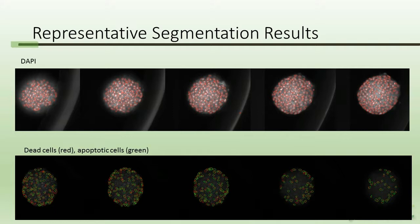What we're able to do through counting all the cells within our population is figure out what percent of those cells are dead and what percent are apoptotic, using the fast radial symmetry segmentation approach that I described previously.